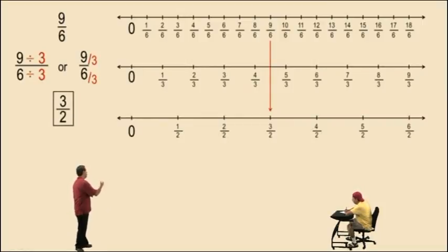And it is true, 9 sixths is equivalent to 3 halves. This is how you reduce. You basically look for a common factor, a number that divides both evenly into the numerator and denominators.